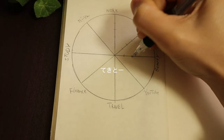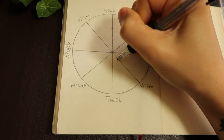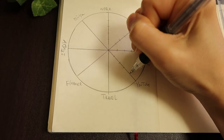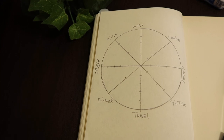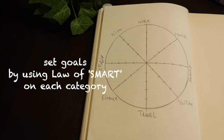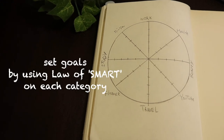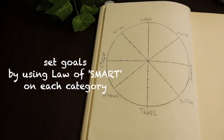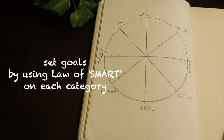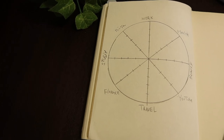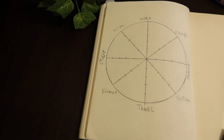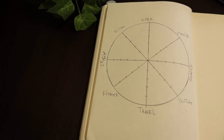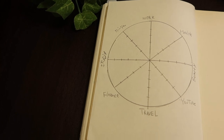これを5段階に分けます。これもまた、私は得意の適当で。ルーラーとか使いたい方は使ってください。書き終えたら、それぞれのカテゴリーで、SMARTを使って、今年の年末までに自分がどうなっていたいかの目標を立てます。